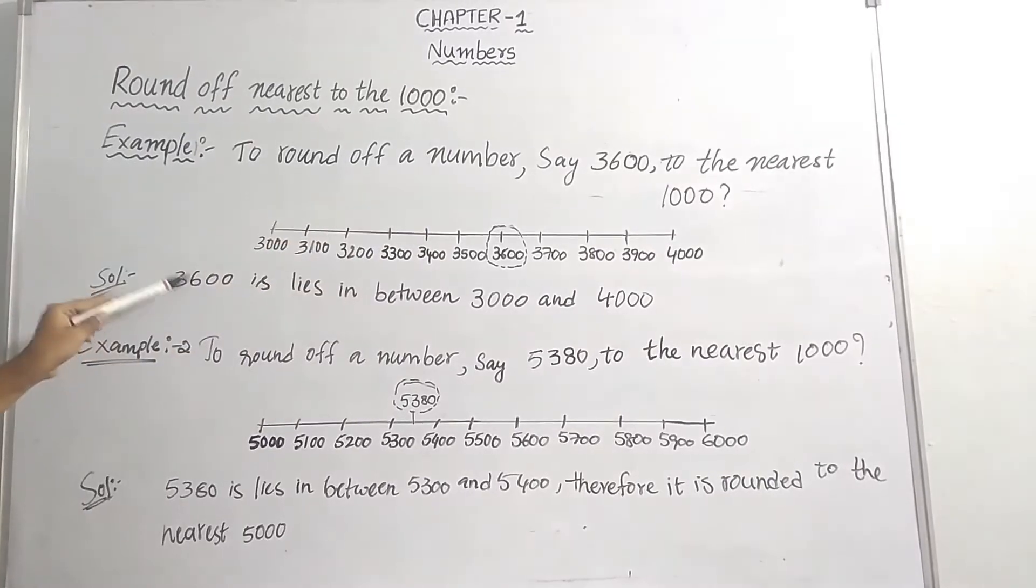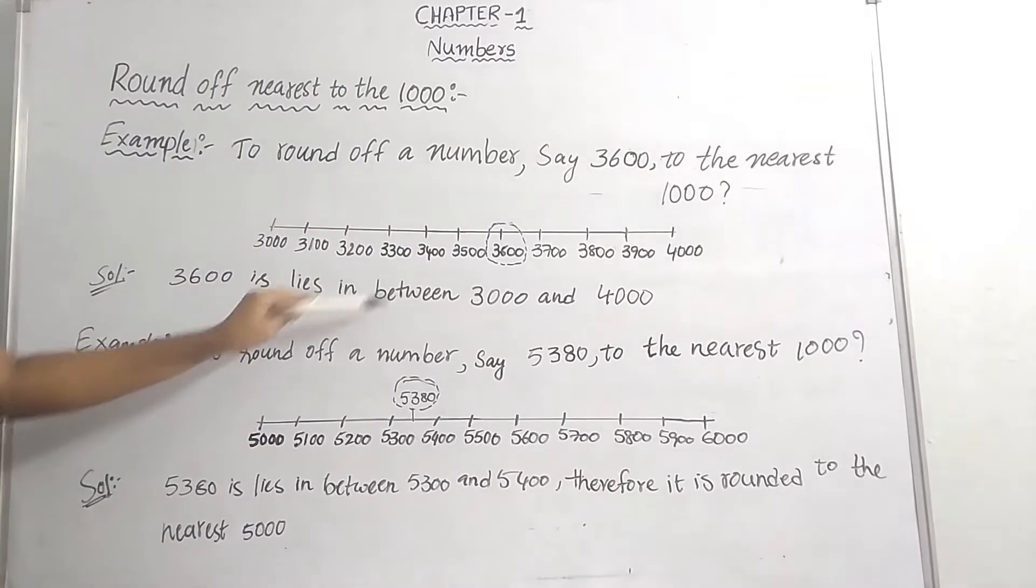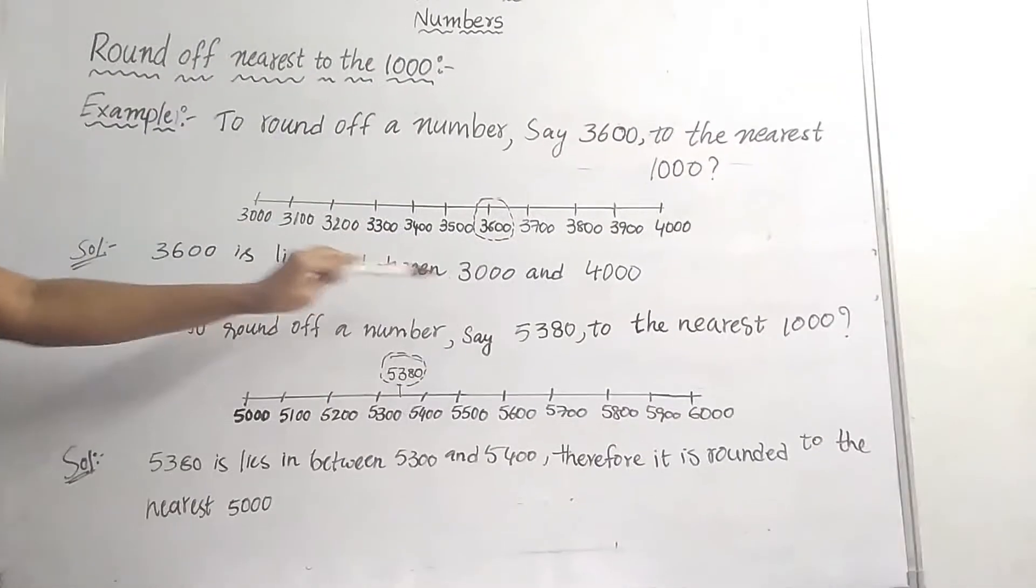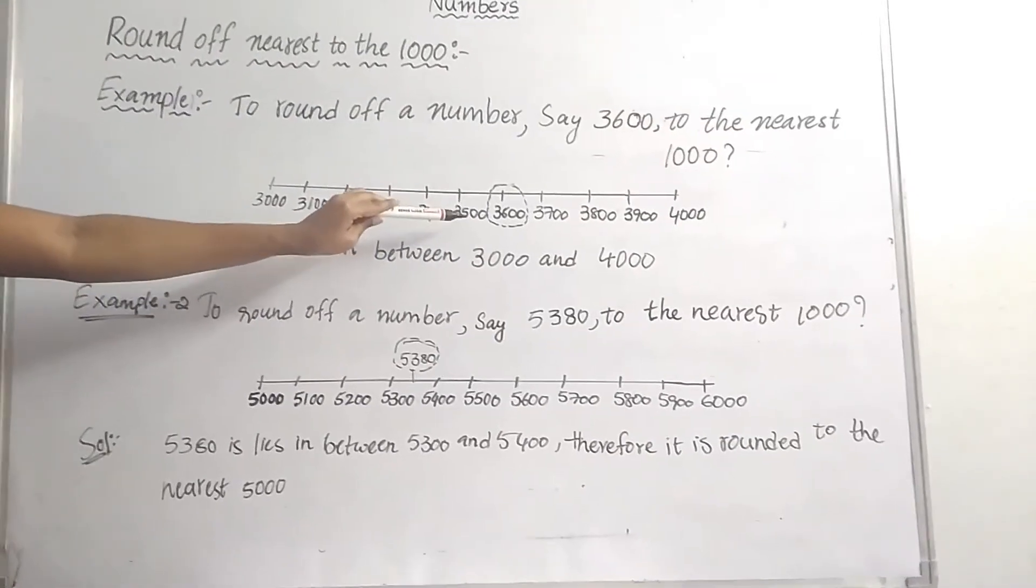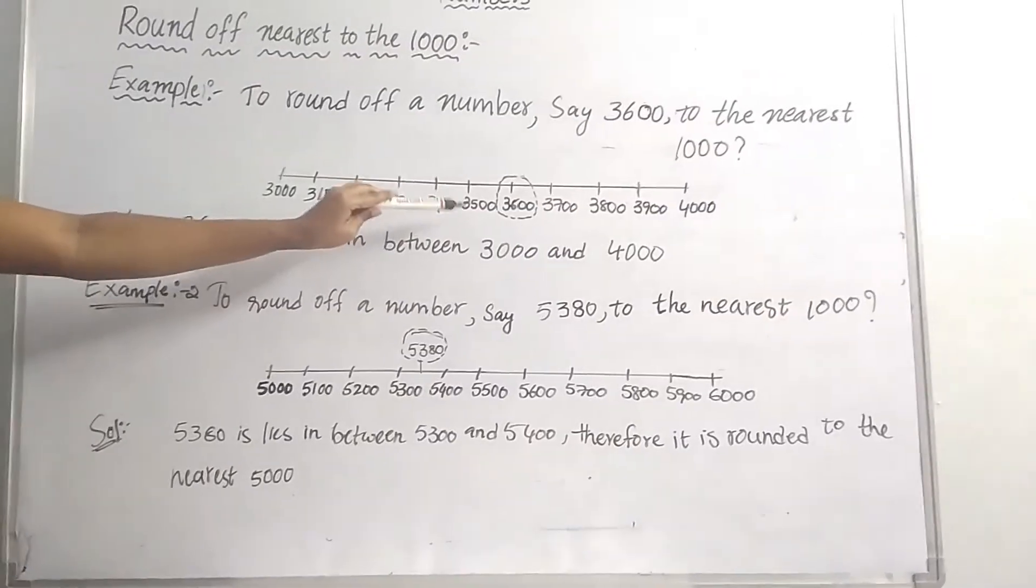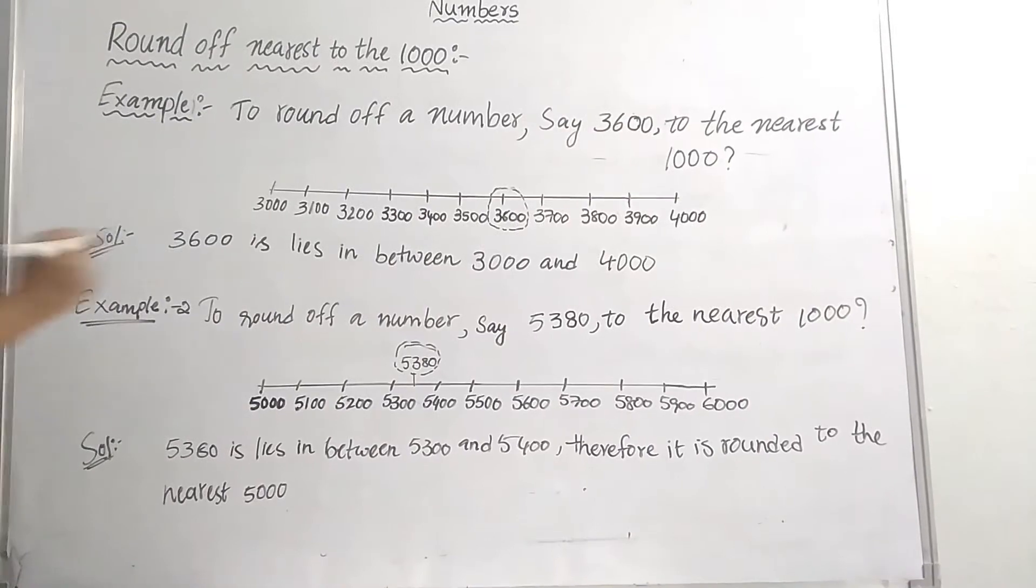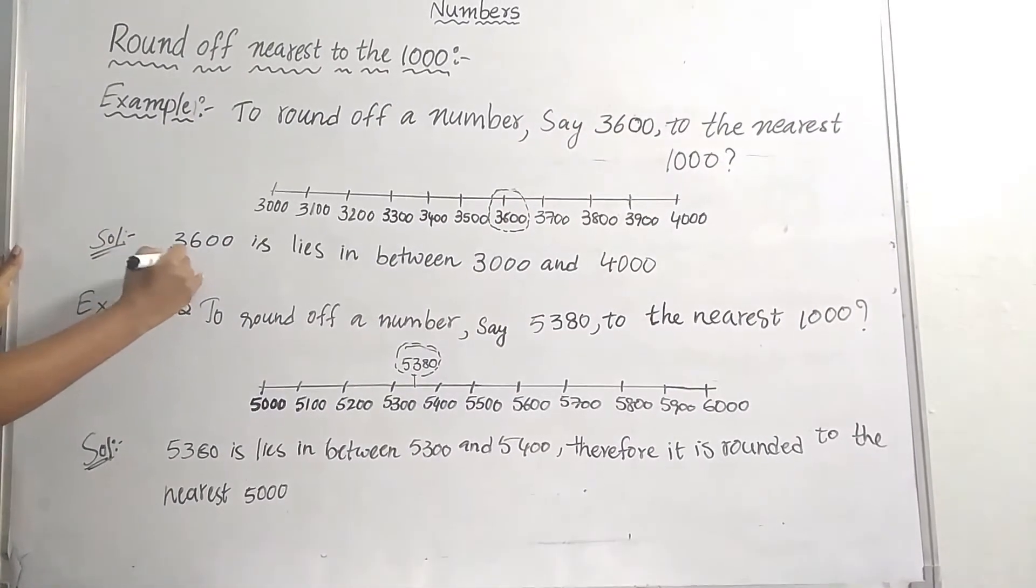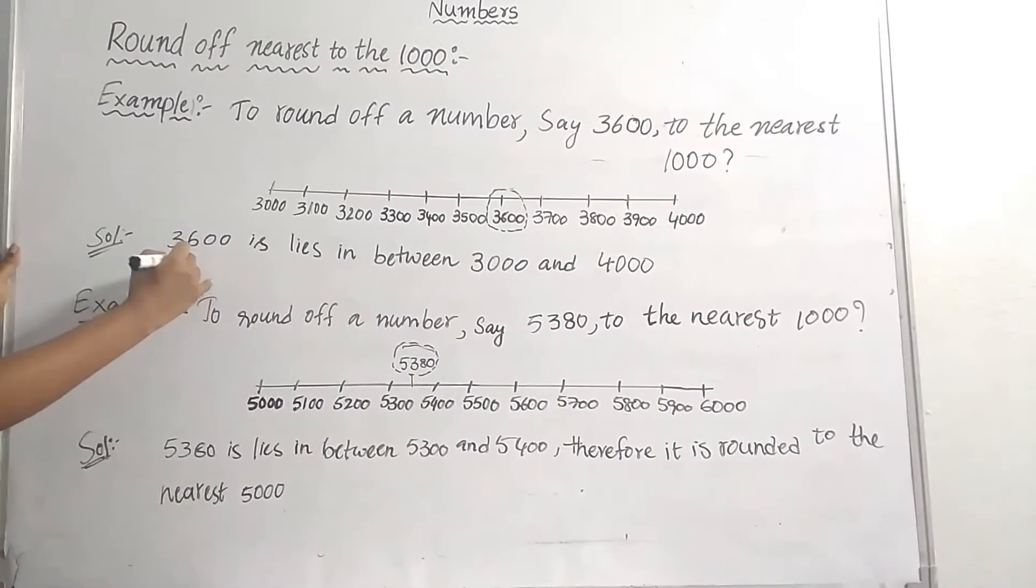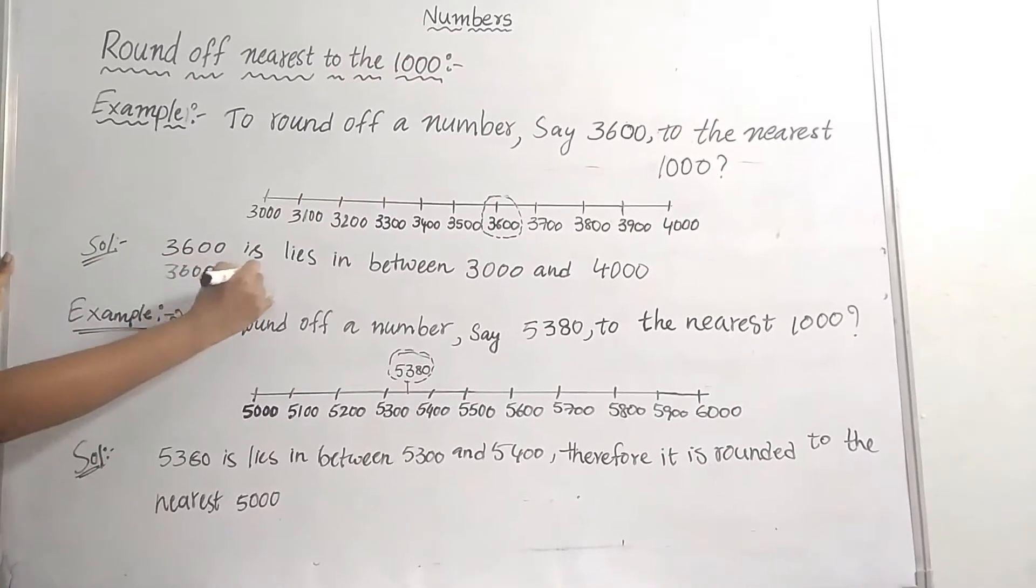4000. 3600 lies in between 3000 and 4000. 3600 is nearest to which number? 4000.